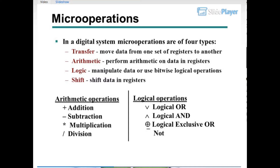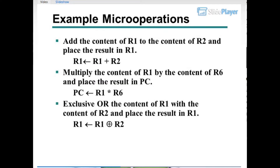The four types of micro operations are: Transfer — move data from one set of registers to another; Arithmetic — perform arithmetic on data in registers; Logic — manipulate data or use bitwise logical operations; Shift — shift data in registers. Arithmetic operations include addition, subtraction, multiplication, and division. Logical operations include logical OR, logical AND, logical exclusive OR, and NOT.